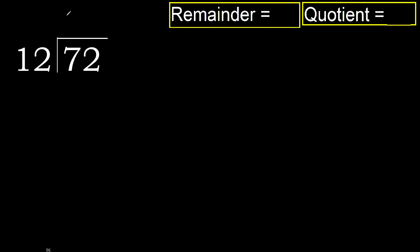12 multiplied by 7 is also greater. 12 multiplied by 6 — 72 is not greater, so 6 is our quotient digit.